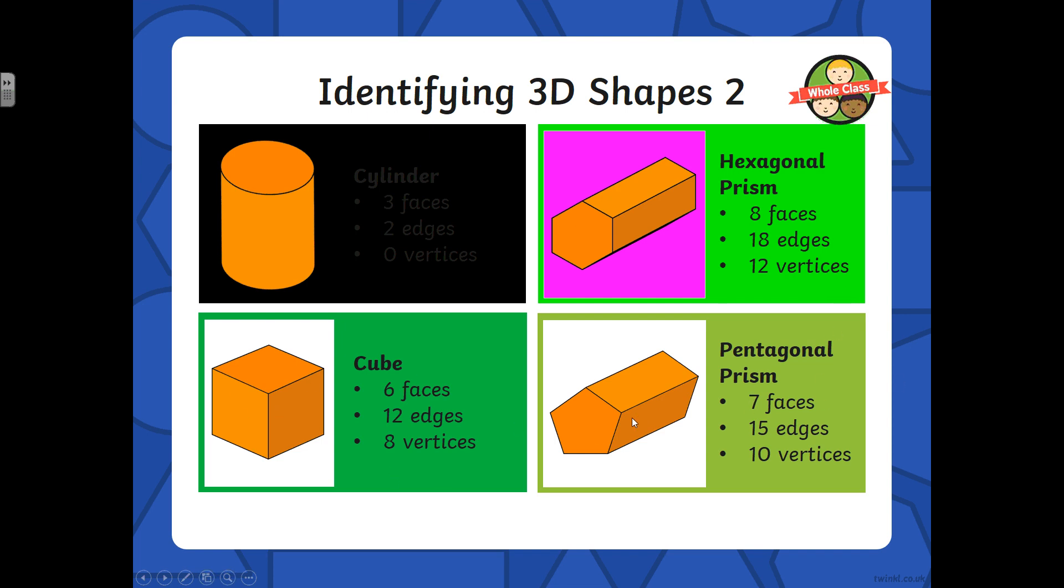Pentagonal prism: 7 faces, 15 edges, 10 vertices. What is the word vertices? If there's one, it's a vertex. If there are many, it's vertices. And they are the corners of the 3D shapes.